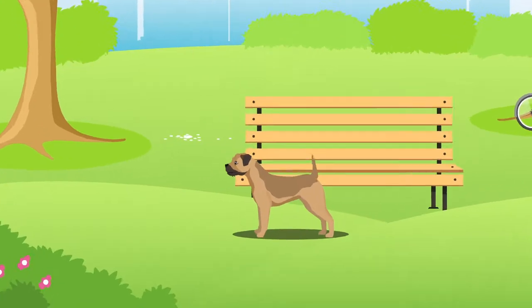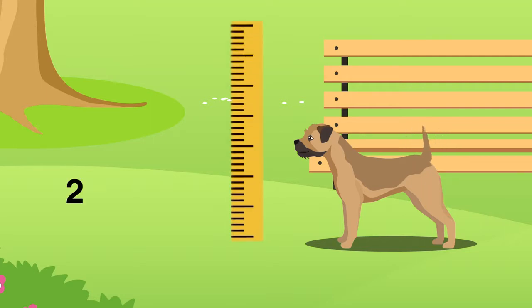The Border Terrier is considered a small dog which typically grows between 25 and 30 cm in height and can weigh between 5 and 7 kg.